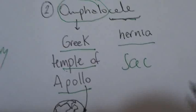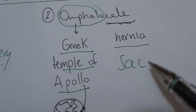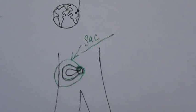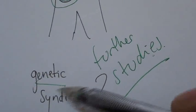So remember, Omphalos, it's the middle of our body, it's the umbilical, the navel, covered with a sack. So it's the content, intestinal content, covered with a sack, going through the umbilicus. And you need further studies because it could be related with genetic syndrome.